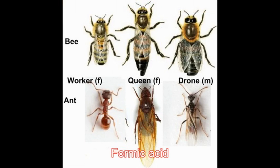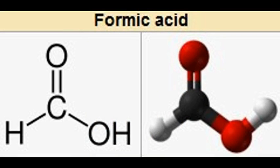Formic acid is found in the venom of bee and ant stings. A major use of formic acid is as a preservative and antibacterial agent in livestock feed.